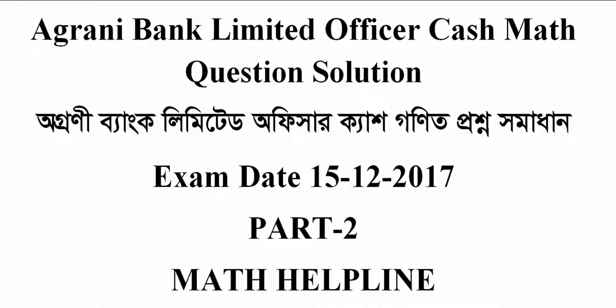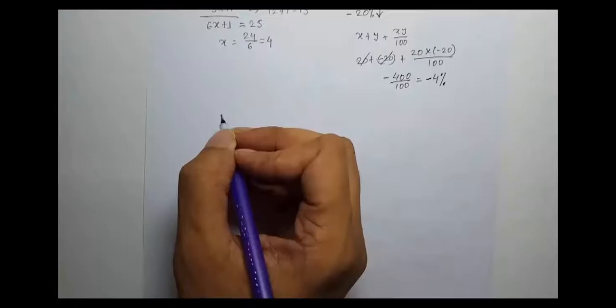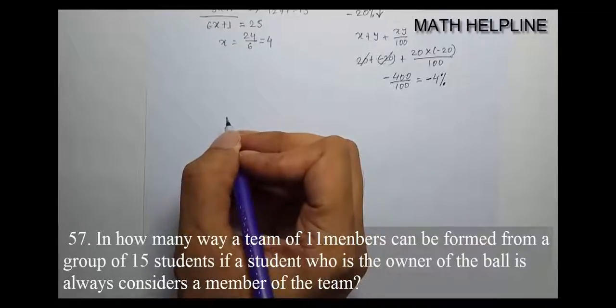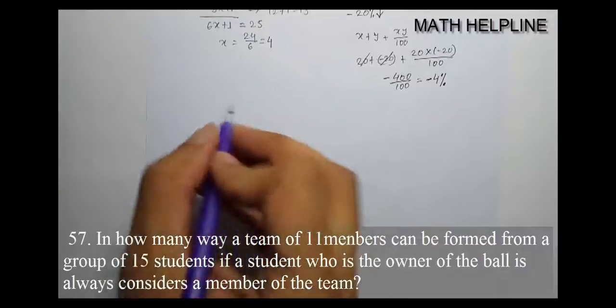Let's start the second part. Problem number 57: In how many ways a team of 11 members can be formed from a group of 15 students if a student who is the owner of the ball is always considered a member of the team?